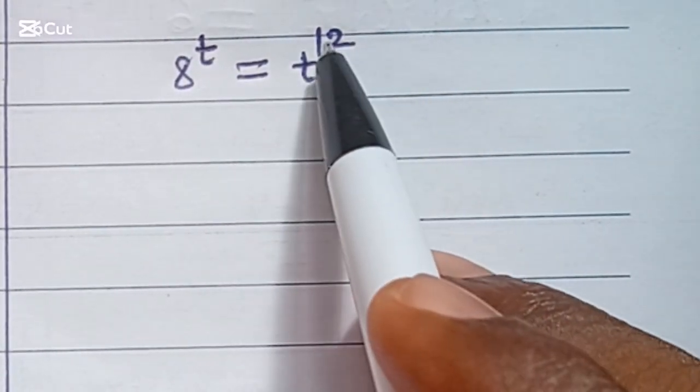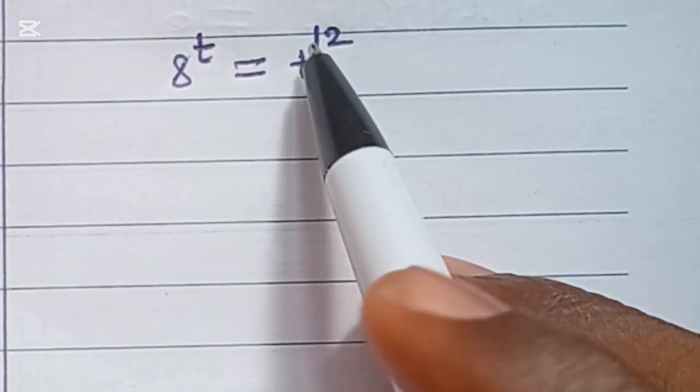8 to the power of t is equal to t to the power of 12. This is another example of a transcendental equation.